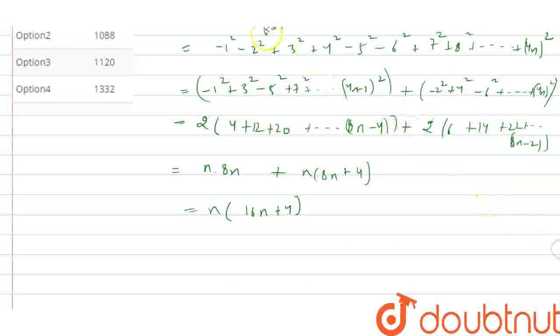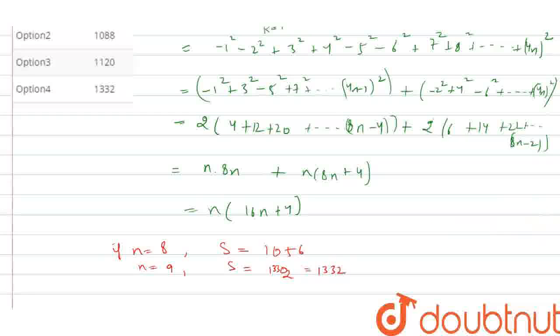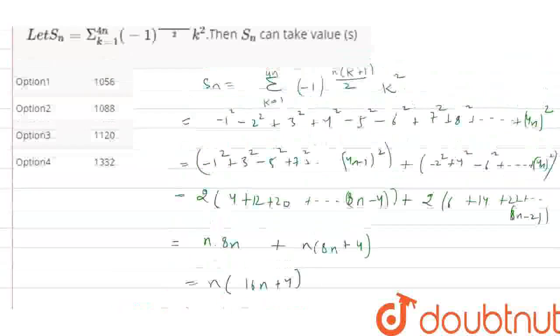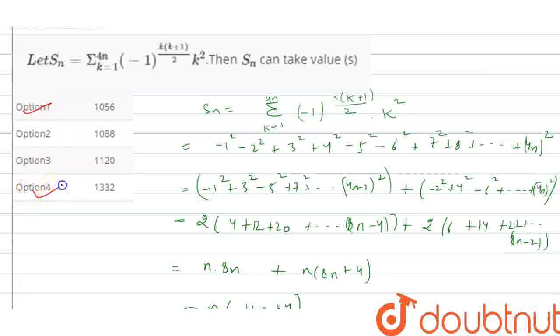If we substitute n equals 8, the sum equals 1056. If n equals 9, the sum is 1332. So these are the two options: 1056 and 1332.